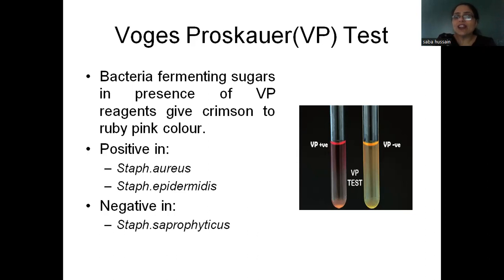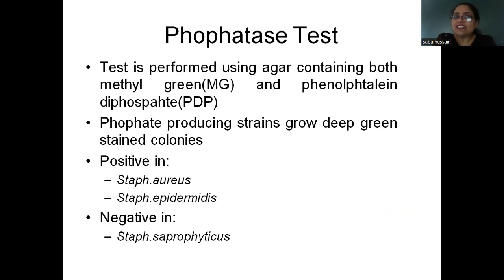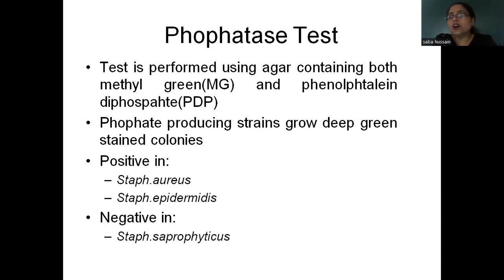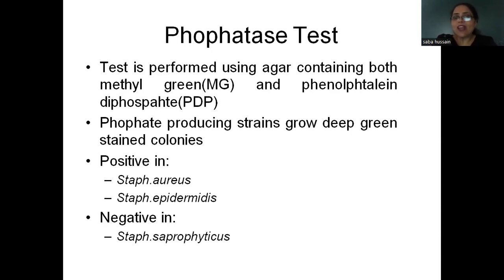Coming to the phosphatase test: this is performed on agar containing both methyl green and phenolphthalein. We are going to see whether the organism is producing phosphatase enzyme or not. Those which have phosphatase enzyme will produce deep green stained colonies. If the organism produces phosphatase, it will act on the phosphate in the media and produce a color change. Staphylococcus aureus and Staphylococcus epidermidis are positive, while Staphylococcus saprophyticus is negative.